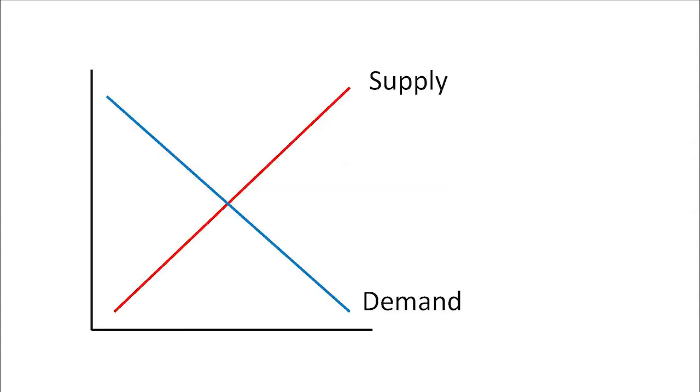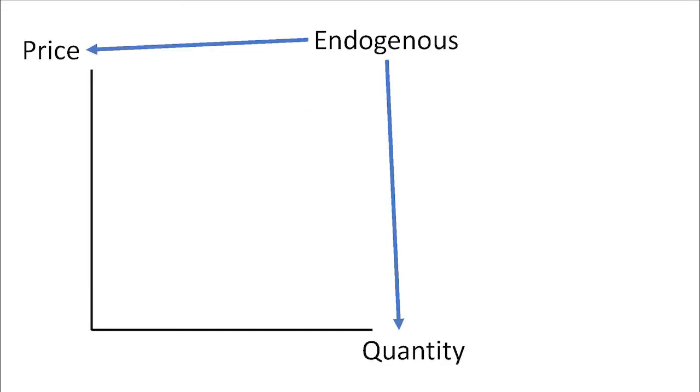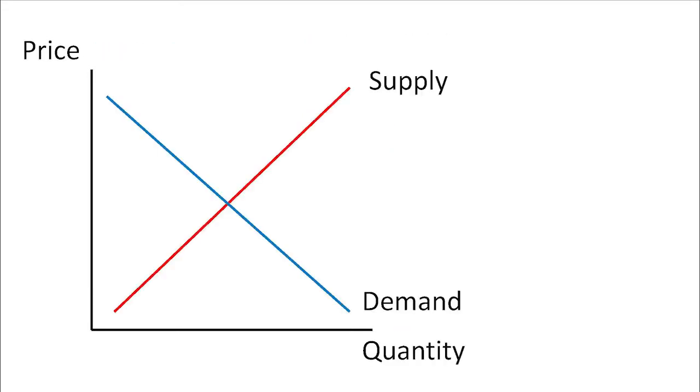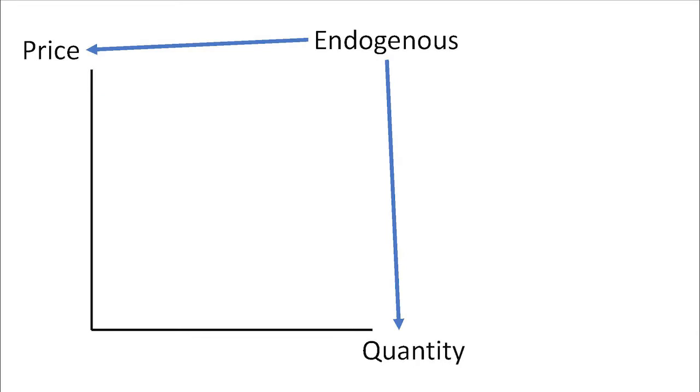On the supply and demand graph, we have two variables that are endogenous to the model: the price variable and the quantity variable. If price changes or quantity changes, that does not mean that supply or demand shift.